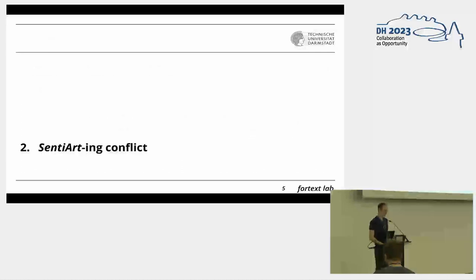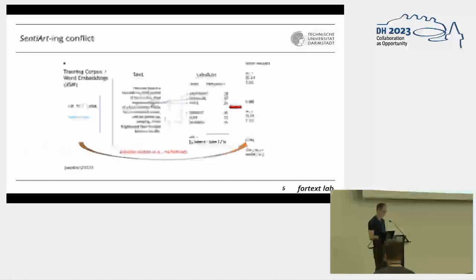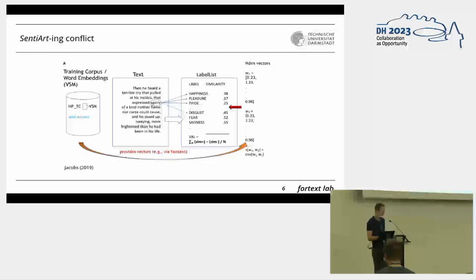This method comes from Arthur Jacobs from his SentiArt project and his word embedding based sentiment analysis. His basic idea is to take a word embedding model and calculate the average similarity of a target word to a set of emotion labels using two label sets: valence and arousal. To get a valence value, you measure the cosine similarity between a target word and each label word, then subtract the average of similarities to negative labels from the average of similarities to positive labels.